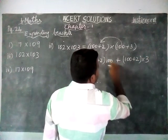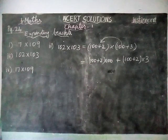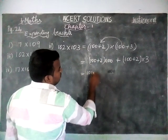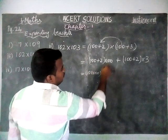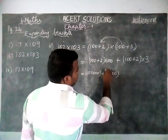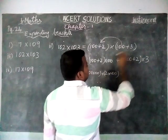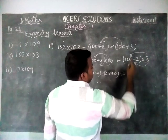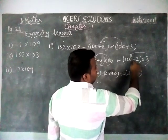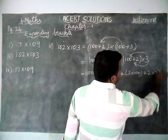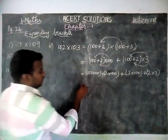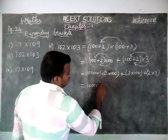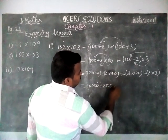Here we multiply by 100, then by 3. The 100 is common for these numbers. Expanding fully: 100 × 100, plus 2 × 100, plus 3 × 100, plus 2 × 3. This gives us 10,000 plus 200 plus 300 plus 6.